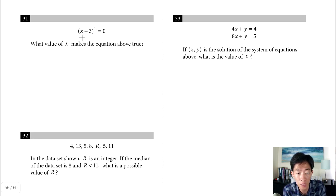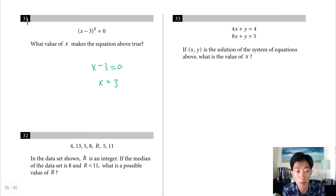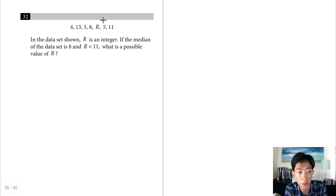Question 31: find the value of x that makes the equation true. The only value raised to the fourth power that equals 0 is 0 itself, so x minus 3 equals 0, meaning x equals 3.